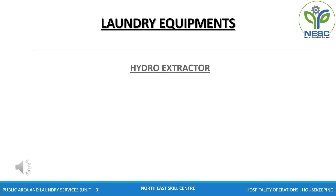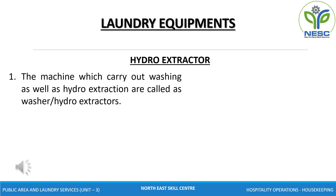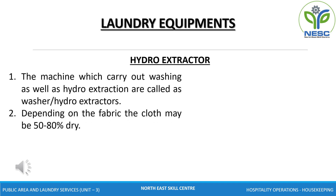Hydro extractors. The machines which carry out washing as well as hydro extraction are called washer-hydro extractors. Most hydro extractors work on a centrifugal action and many machines have a single drum which does both washing and hydro extraction. The drum rotates at a very high speed — faster than the speed of a washing machine — and the clothes are pressed against the sides of the drum; the water passes out through the perforations and out through the drainage pipe. Depending on the fabric, the fabric may be 50 to 80 percent dry.